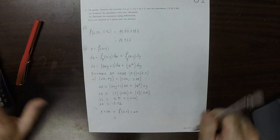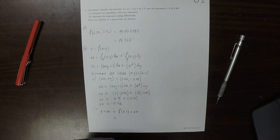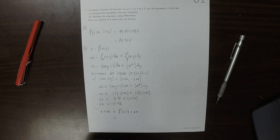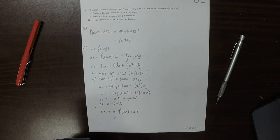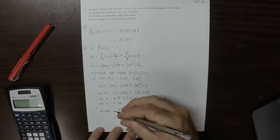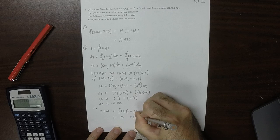So now we plug in 2, 1. So that's 2 squared times 1, plus 3 times 2, plus 5, that's 15, plus negative 0.02.